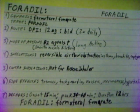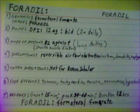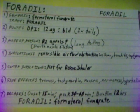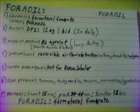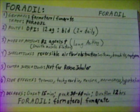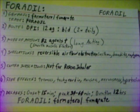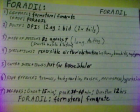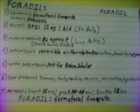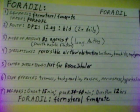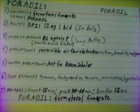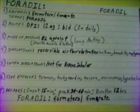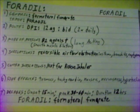Side effects of Foradil are tremors, tachycardia, nausea, nervousness, and hypertension. Foradil's onset is 15 minutes, peak is 30 to 60 minutes, and duration is 12 hours.